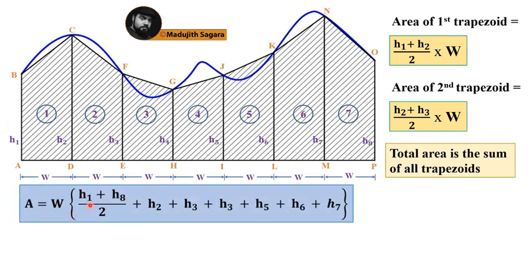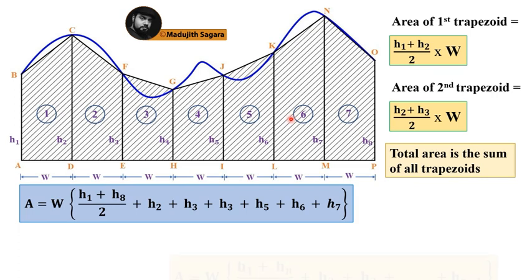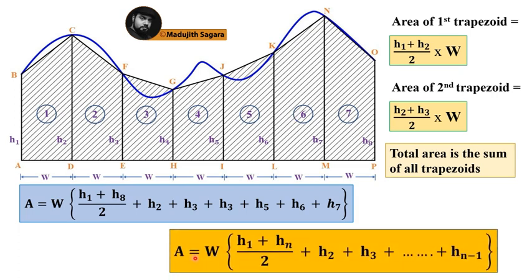Like that. Then total area is the sum of all trapezoid. That is a very simple argument. And we can write it down as this. This is the notation you have to use when you are dealing with this sum, and this is the common equation you can use any sort of area calculation using trapezoidal rule.